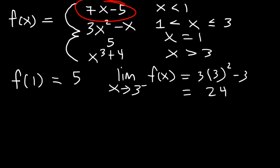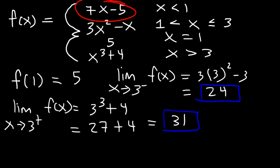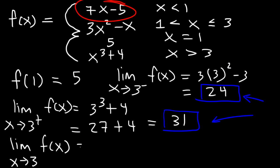For the right-sided limit as x approaches 3, when x is greater than 3, we use x cubed plus 4. So it's 3 cubed plus 4, which is 27 plus 4, equal to 31. The left-sided limit (24) and the right-sided limit (31) don't match, so the limit as x approaches 3 from either side does not exist.